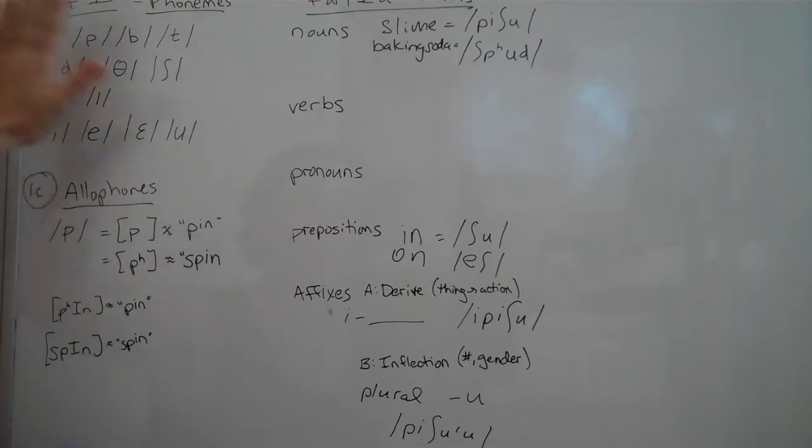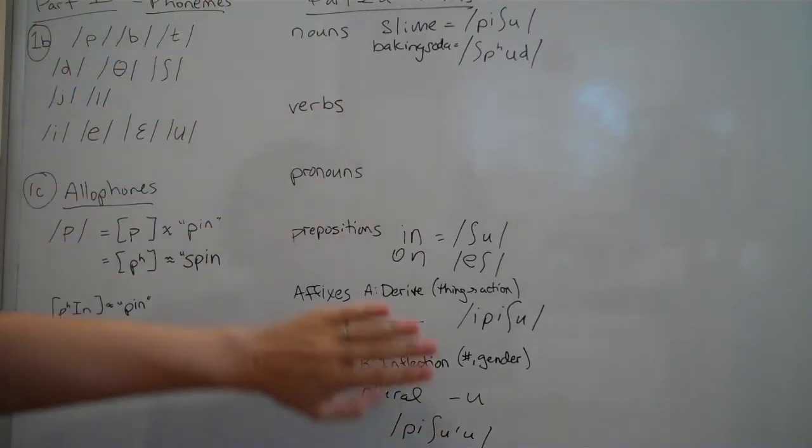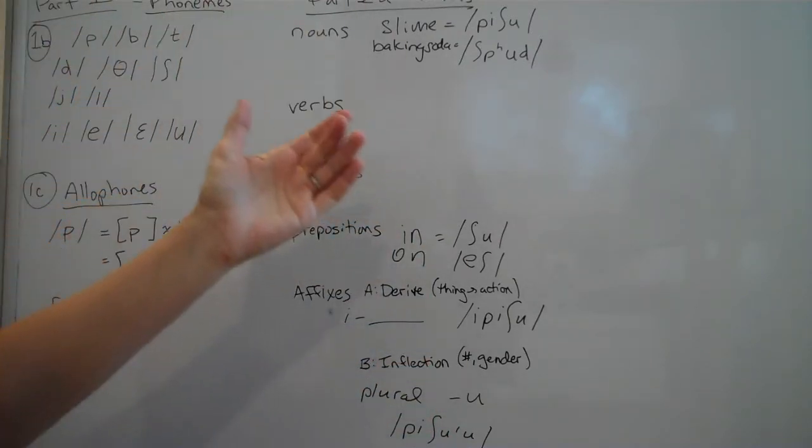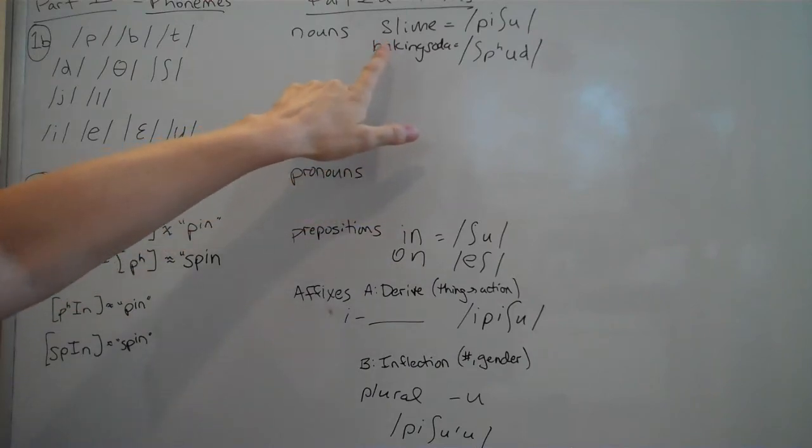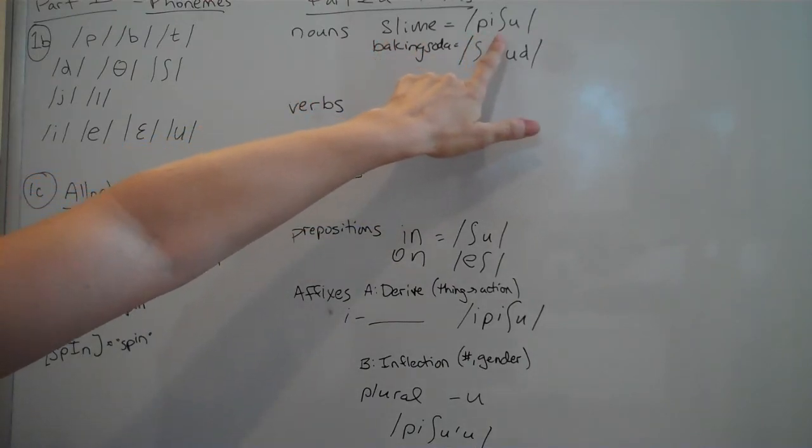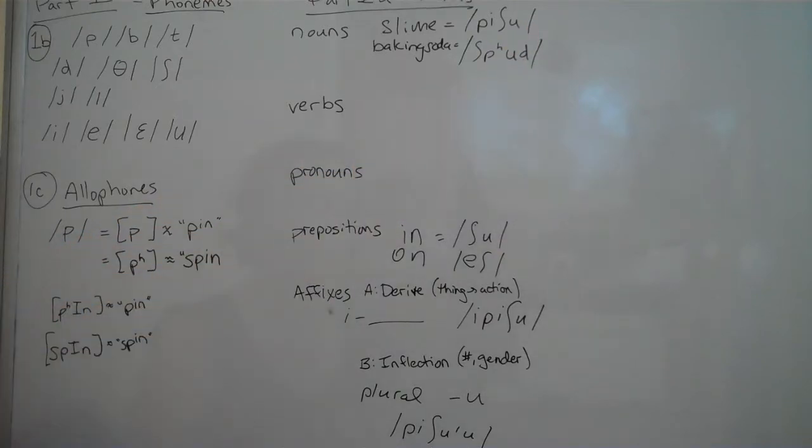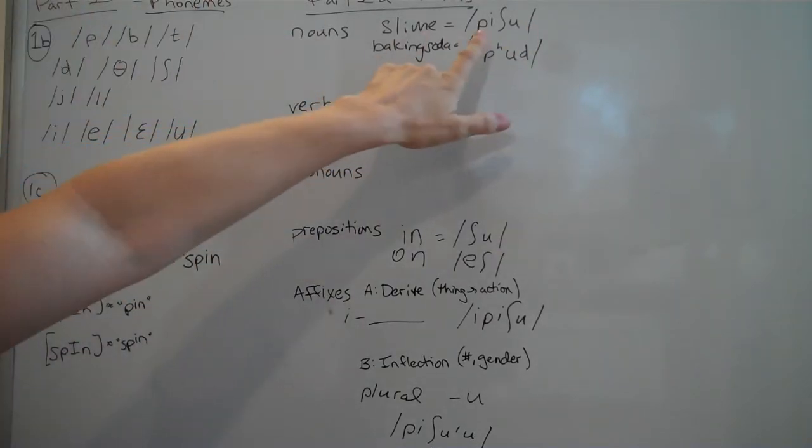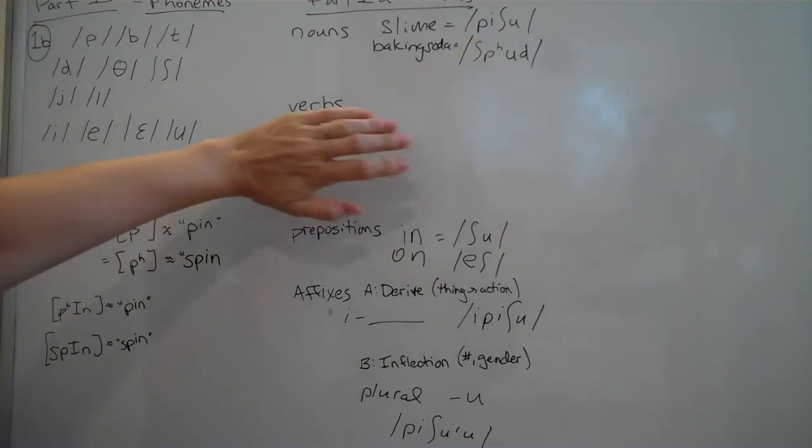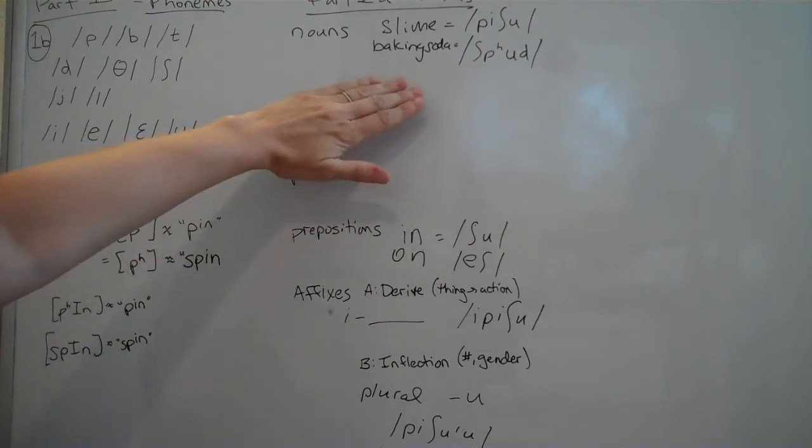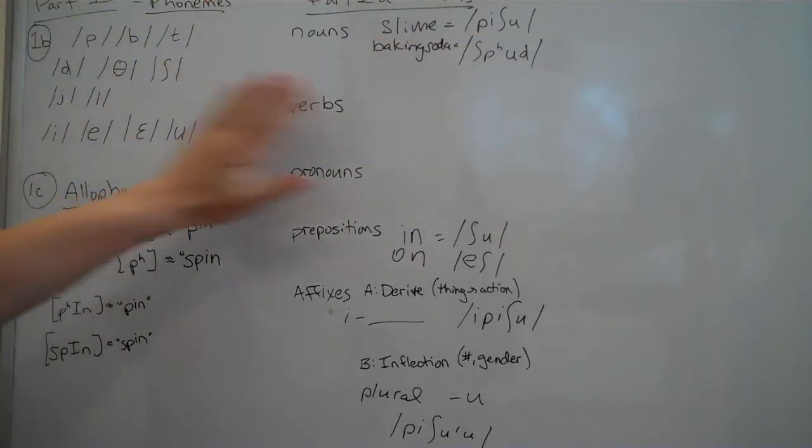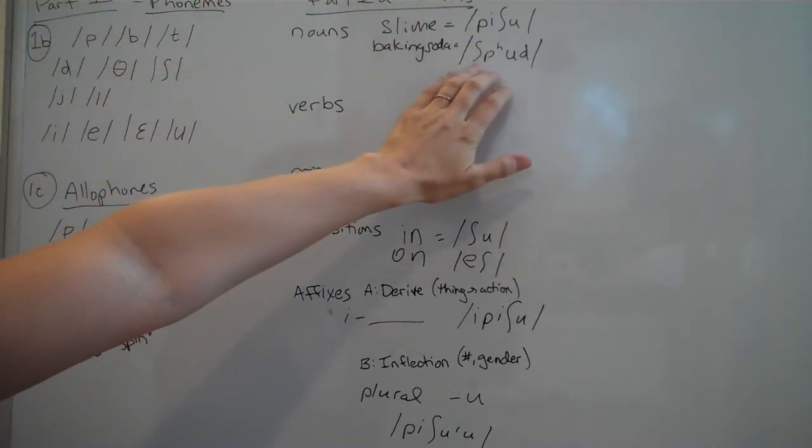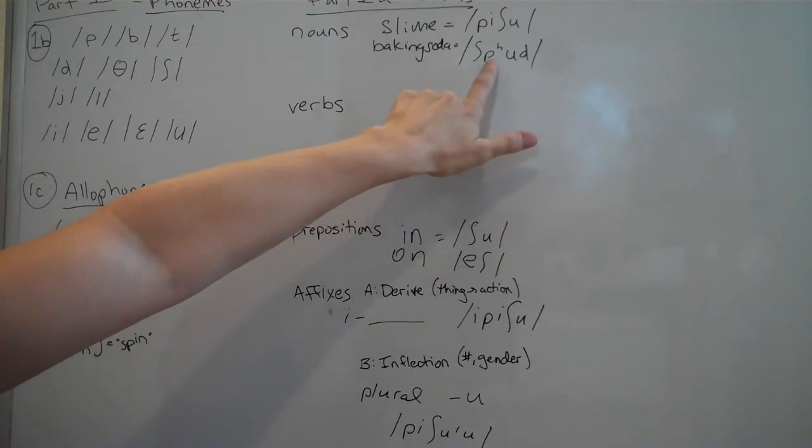And so I've taken my consonants here and made a few words just to get started. So I'm making slime for my instructional video, so I need a word for slime. And so I picked p, e, sh, u, pishu from my preselected consonants and vowels last week to make up a brand new word to mean slime. Same thing for baking soda. I picked others of my consonants to make up a new word, spud, for baking soda. And notice I've indicated or shown the example of my allophone in these two words.